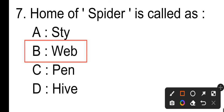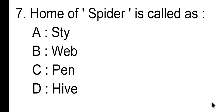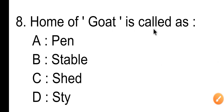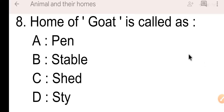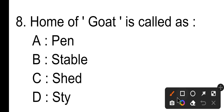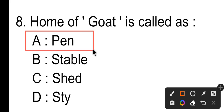Question number eight: the home of goat is called as — Option A is pen, Option B is stable, Option C is shape, Option D is type. Option A, pen, is the correct answer.